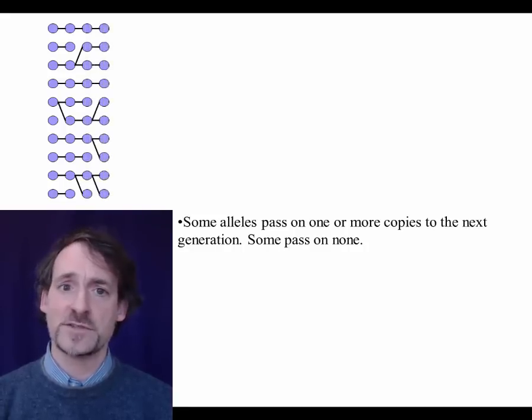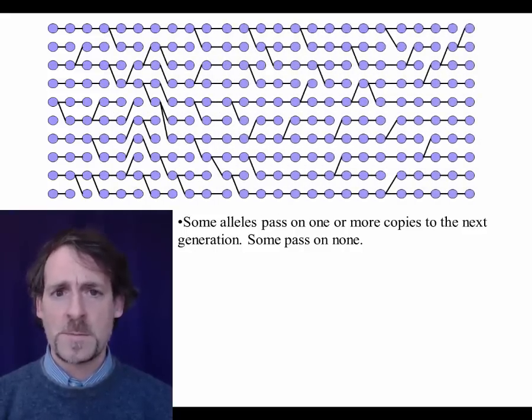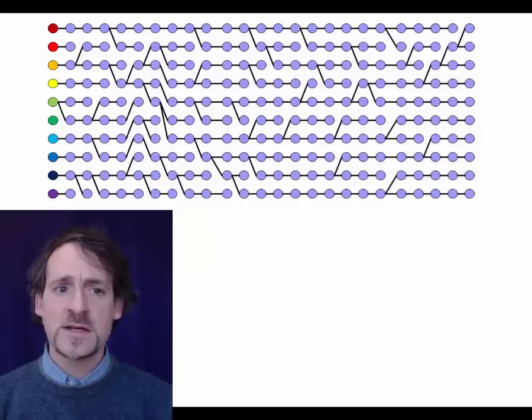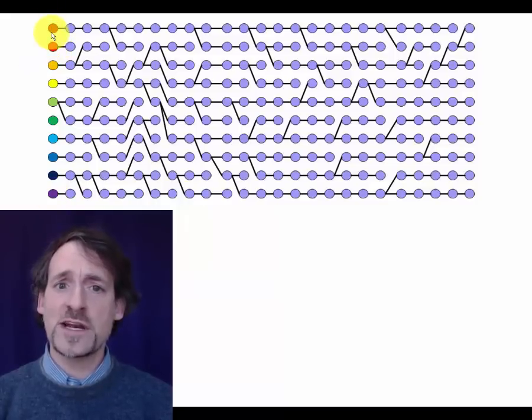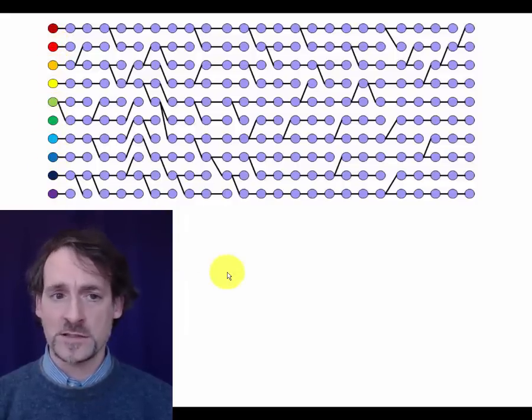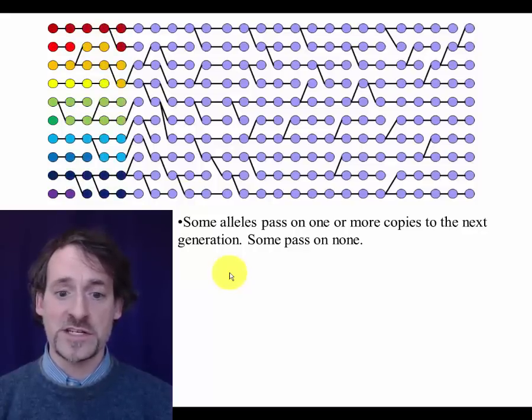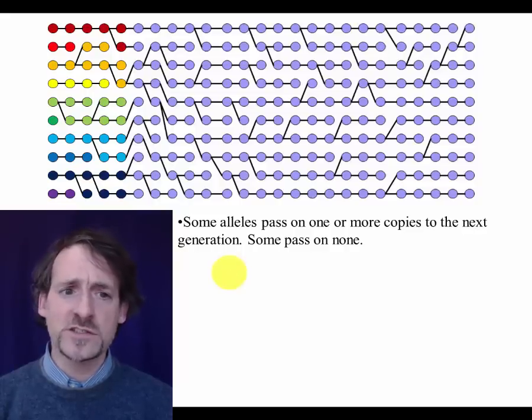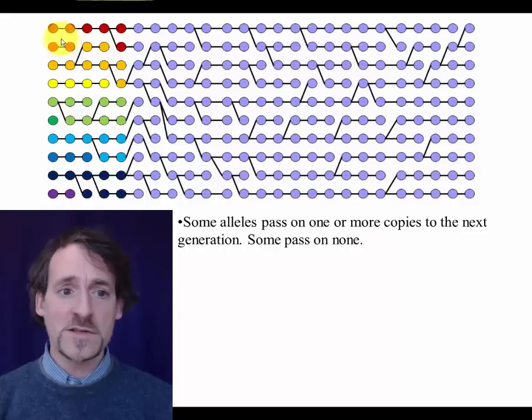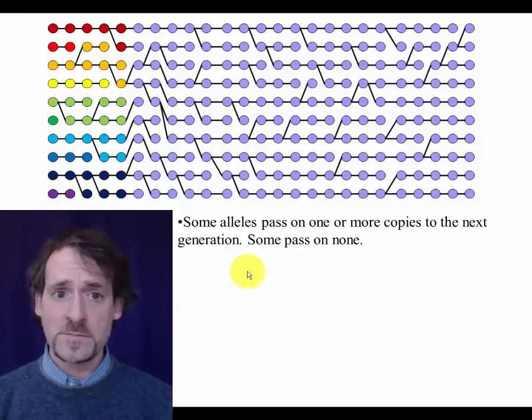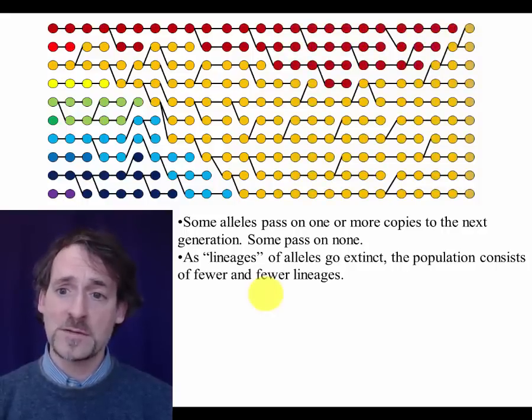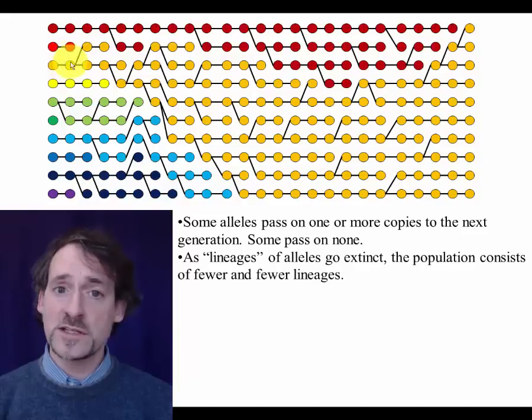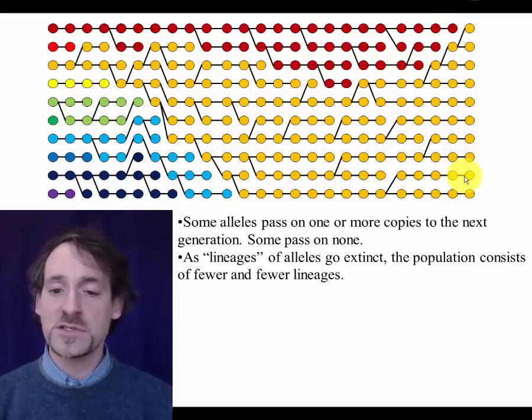And as this continues generation after generation, there's a pattern that starts to emerge. It's easiest to see if we use different colors to show the different lineages, the different genetic lineages which are participating in this population. So let's show what happens to this diagram when you give each one of these 10 alleles a different color. Okay, again, some alleles pass on copies to the next generation. Some pass on none. And after only a few generations, look what's happened. There are a number of these original lineages that have gone completely extinct. Four out of the 10, in fact, are completely gone. And as time goes on, more and more of them drop out until ultimately what's going to happen is that a single ancestral allele will be the descendant of all the alleles at this particular time.